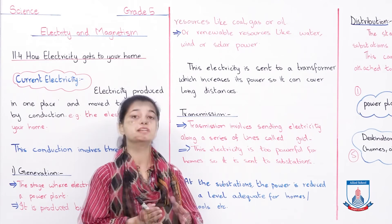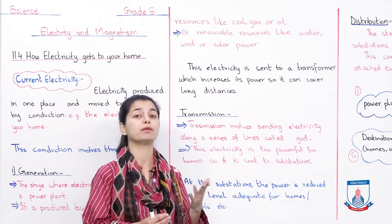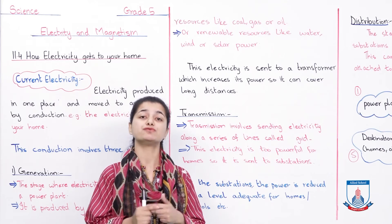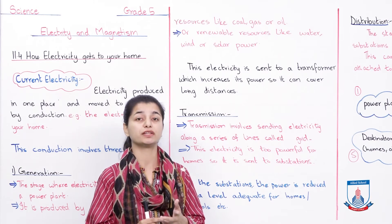So that is why you increase power in the transformer so electricity can travel far away. And when it goes to substations, you reduce the power. So that's what we've studied - we learned about generation, where electricity is produced in power plants and goes to a transformer where power increases.